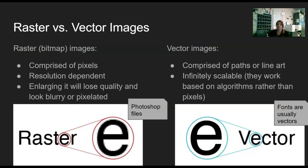Photoshop images and Photoshop files are raster images, so that's something we have to think about. Now in other classes where you learn illustration, you create vector images, and vector images are comprised mathematically — they're like paths or line art and they're infinitely scalable. I can make a billboard with something if I wanted to, and they're put together based on algorithms, not pixels.